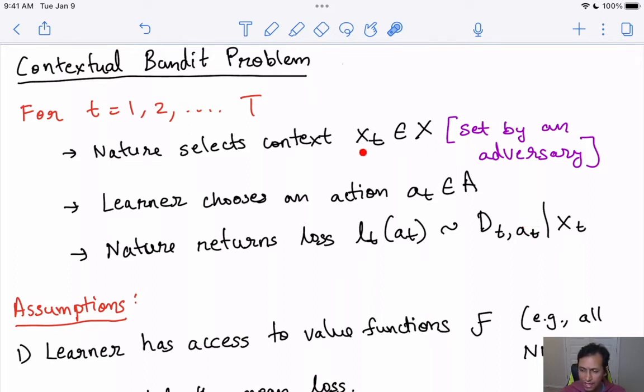You can imagine xt to be user features that you see online and action at to be the choice that the system takes. For instance, in a typical machine learning system such as recommender systems, xt is user features and at is which content you want to recommend to this user. The loss lt(at) typically depends on user's engagement on this particular action that the system suggested.